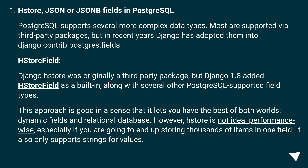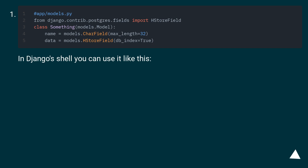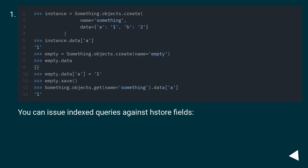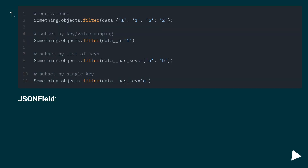This approach is good in a sense that it lets you have the best of both worlds: dynamic fields and a relational database. However, HStore is not ideal performance-wise, especially if you are going to end up storing thousands of items in one field. It also only supports strings for values. In Django Shell you can use it like this. You can also issue indexed queries against HStore fields.